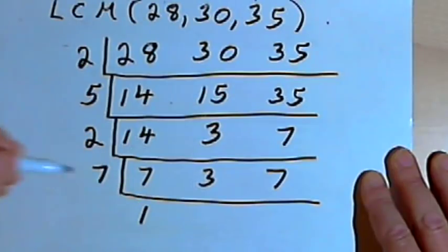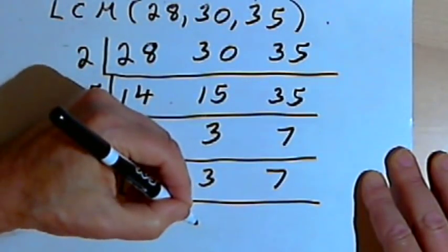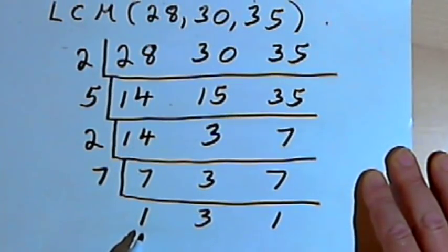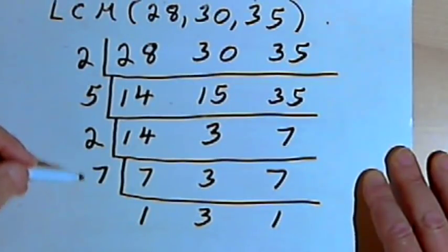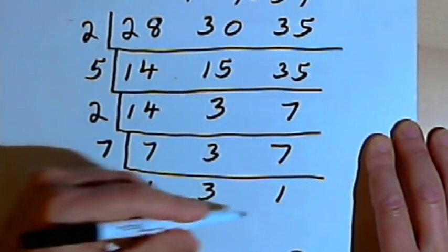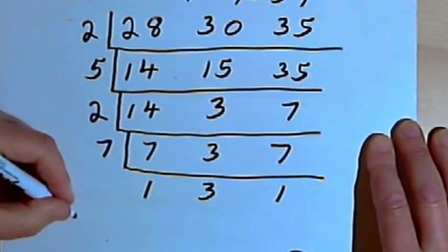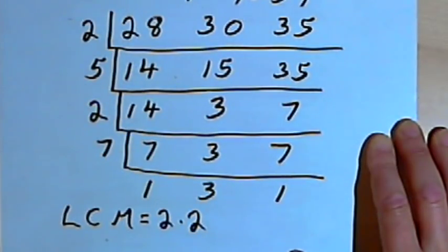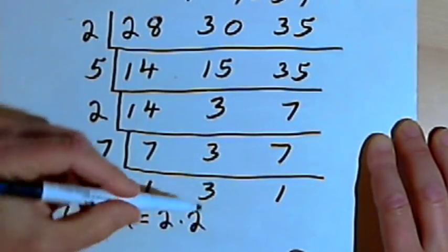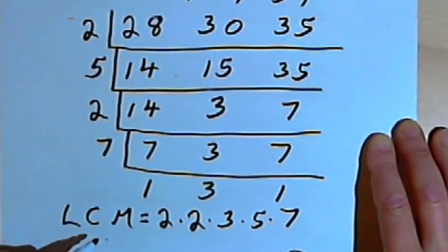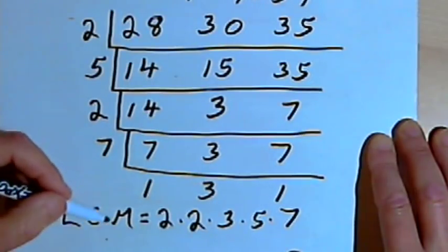7 goes into 7 one time. 7 does not divide into 3, so I'll bring down the 3. 7 divides into the other 7 one time. Now I've got prime numbers along the bottom, and the only thing repeated is 1s. I've also got prime numbers along the left side. All of those prime numbers multiplied together give me the least common multiple. I won't worry about multiplying in the 1s, since 1 times anything doesn't change its value. So the LCM is 2 × 2 × 3 × 5 × 7.